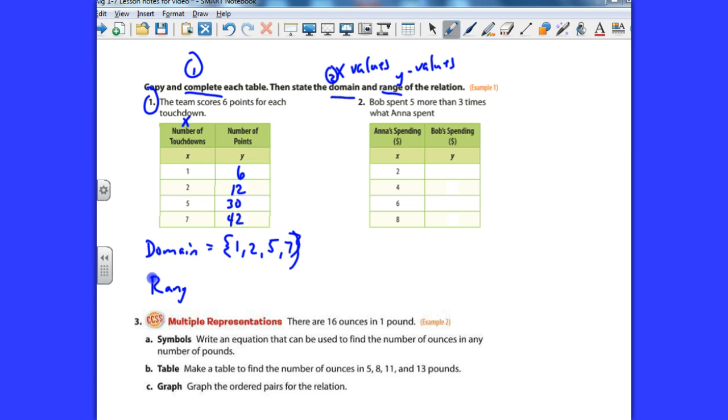And then the range, that will be all the values for y. 6, 12, 30, and 42. So there you go. That takes care of number one. Now, I think what I'm going to do is stop this video here and start another one because I think I'm going to go over the 10-minute limit if I keep going. So we'll pause here and we'll start right up with part two for chapter 1-7 in a moment.